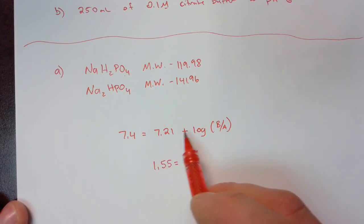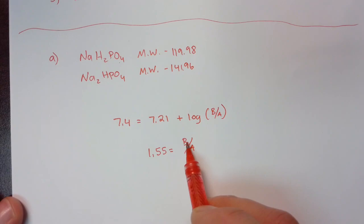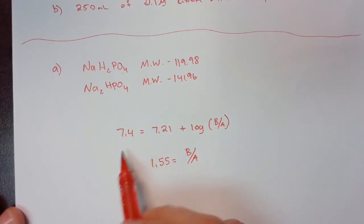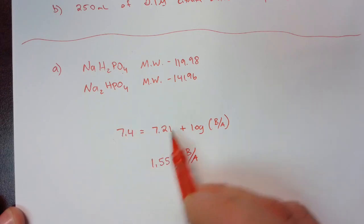So with a little bit of mathematical manipulation, we end up with 1.55 as our ratio of base to acid. And we would expect the ratio to be greater than one because the pH here is greater than the pKa. So there must be more base than acid. Because we know that at the pKa, the concentrations of base and acid are the same.